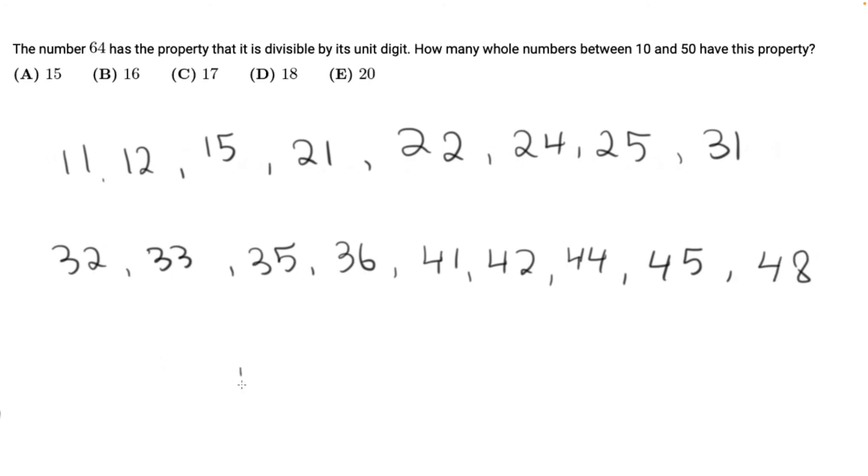So we have a total of 17 numbers that have the property of being divisible by their unit digit. So we have answer choice C, and that is our answer.